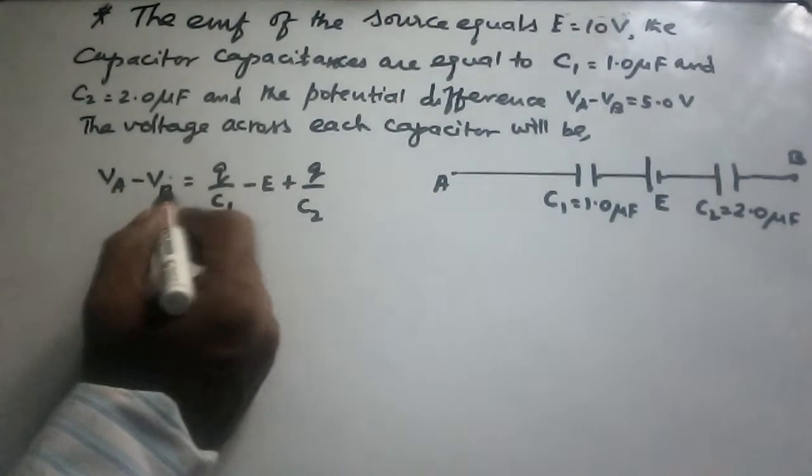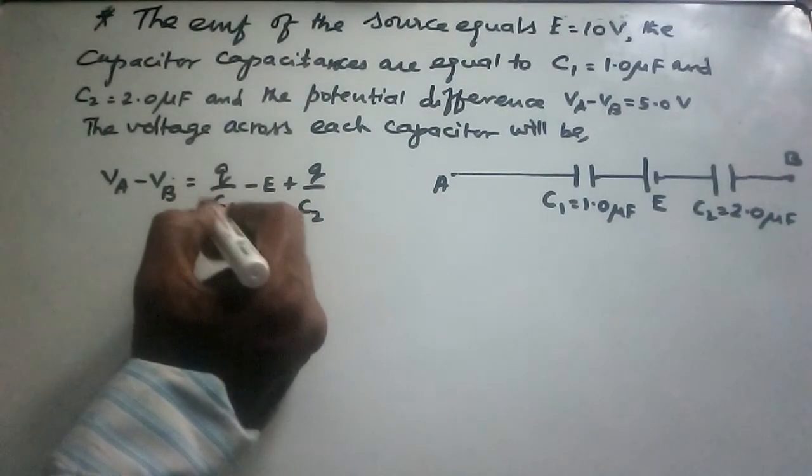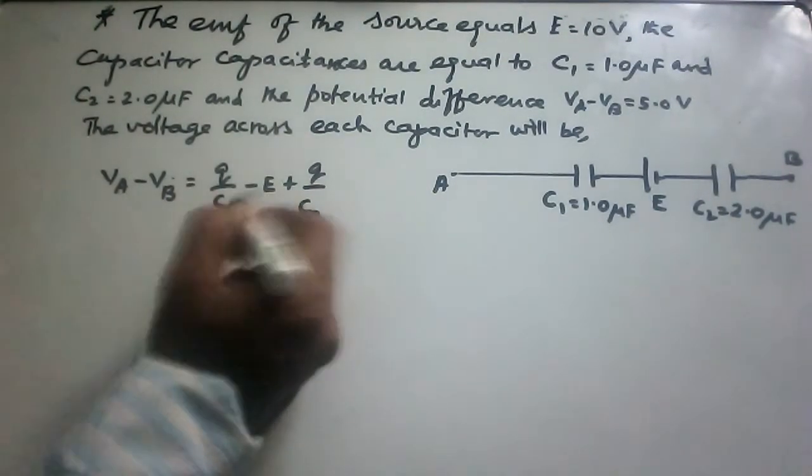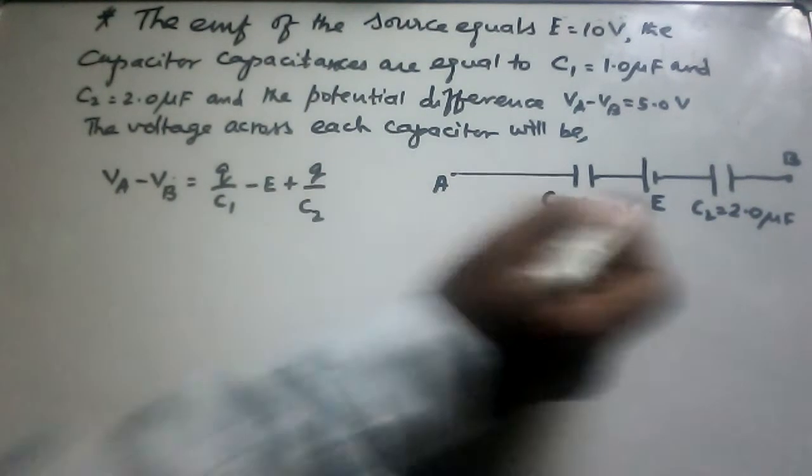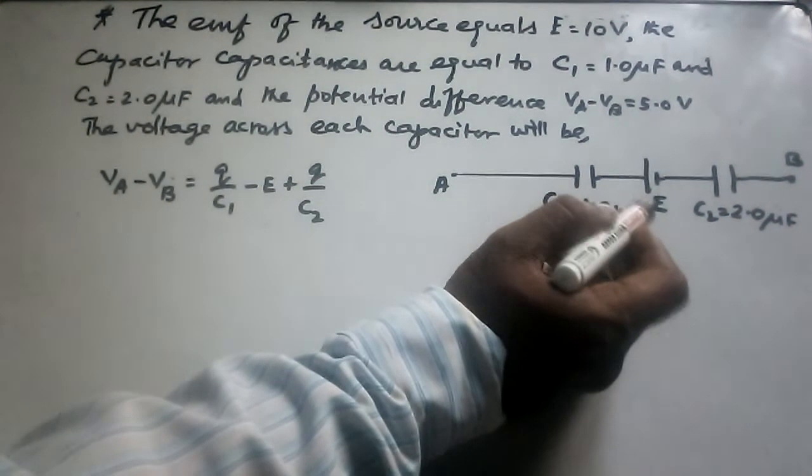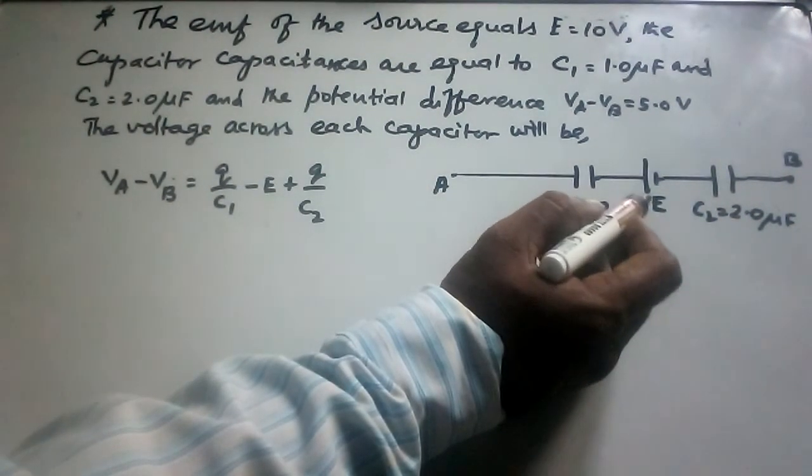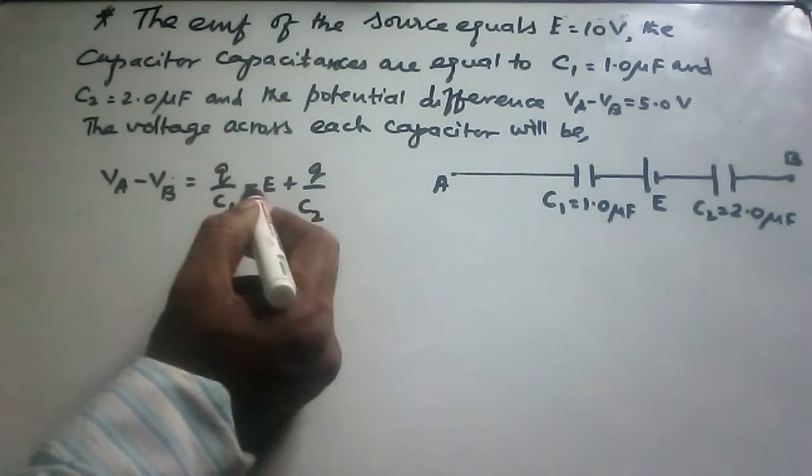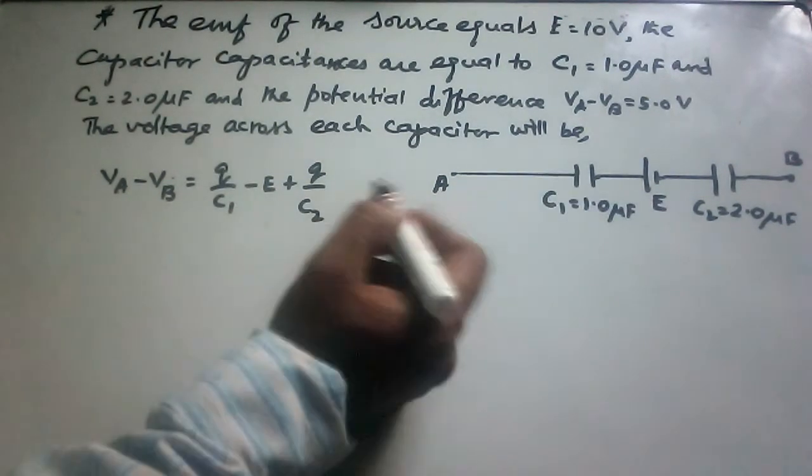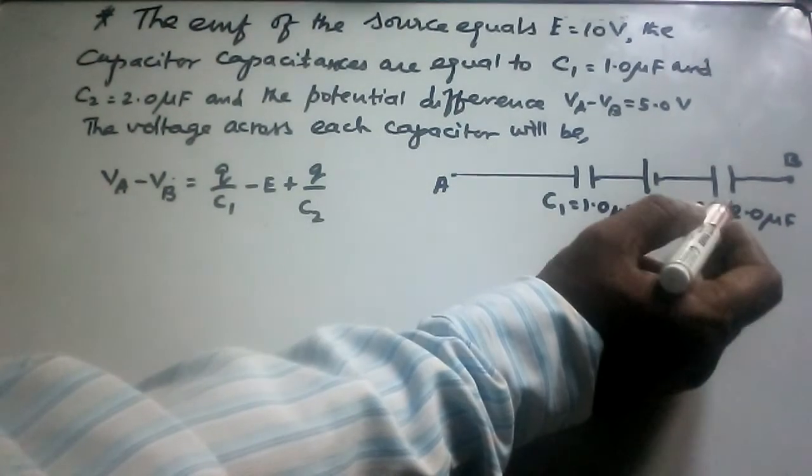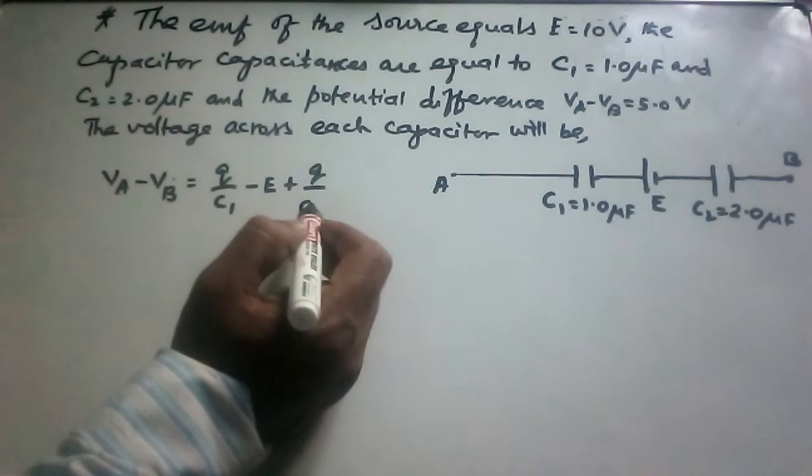VA minus VB is the voltage across the plates of C1, which is Q/C1. This is a source, so minus E, plus the voltage across the plates of C2, which is Q/C2.